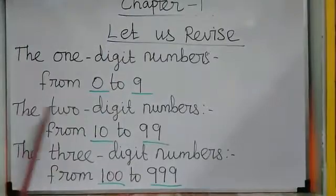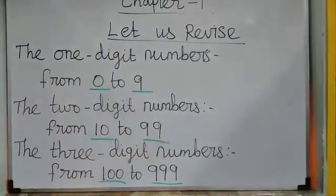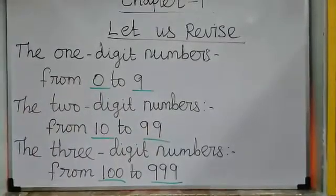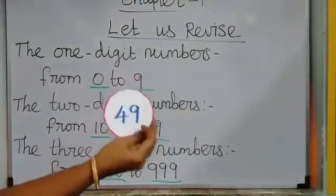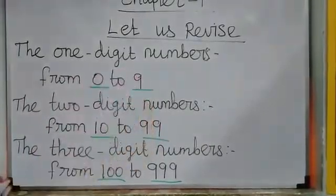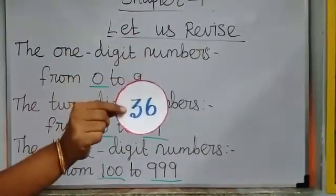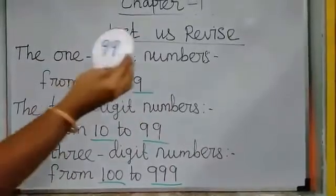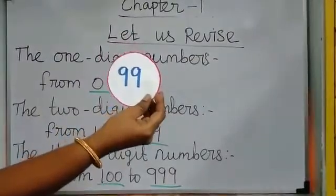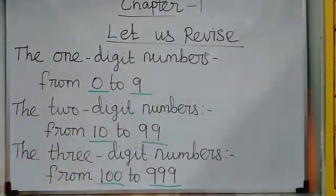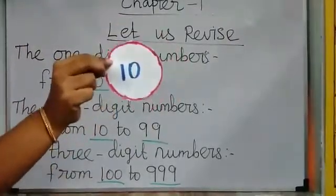The next one: 2-digit numbers, from 10 to 99. For example, 49 is a 2-digit number. 36 is also a 2-digit number. 99 is a 2-digit number. 10 is also a 2-digit number.